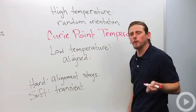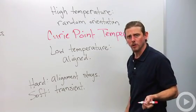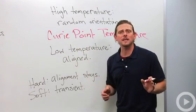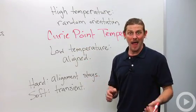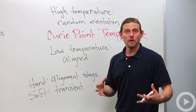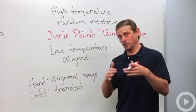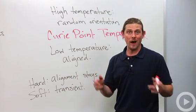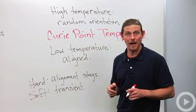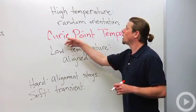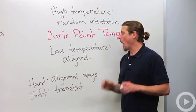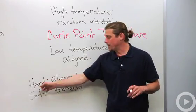The temperature that distinguishes between these two behaviors is called the Curie point temperature. The phase transition that takes us from a permanent magnet to a non-permanent magnet — with random orientations of magnetic moments — is called the Curie transition.